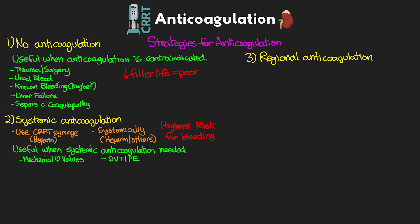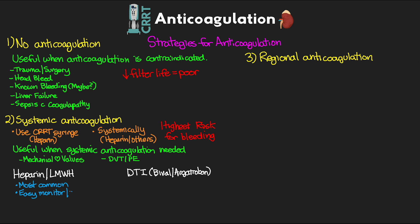There are two main drug groups for systemic anticoagulation. The first is heparin or low molecular weight heparin — although enoxaparin is not often used for this. The other group is our direct thrombin inhibitors, which include bivalirudin, argatroban, or other medications of that class.